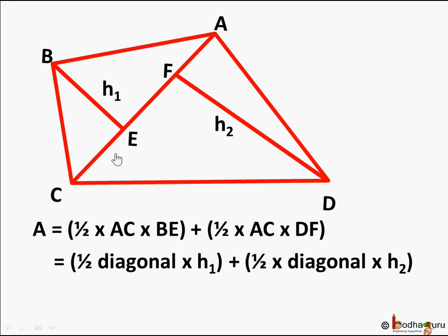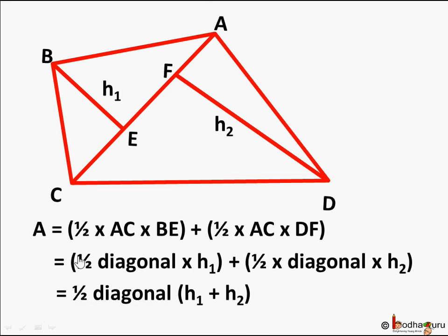We can write AC as the diagonal of the quadrilateral — it is common to both triangles. Calling the heights H1 (which is BF) and H2 (which is DF), and since the diagonal and the half are common, we can factor them out. So the area of any generic quadrilateral is half the length of its diagonal multiplied by (H1 + H2), where H1 and H2 are the perpendiculars drawn from the opposite vertices to the diagonal, each meeting it at 90 degrees.